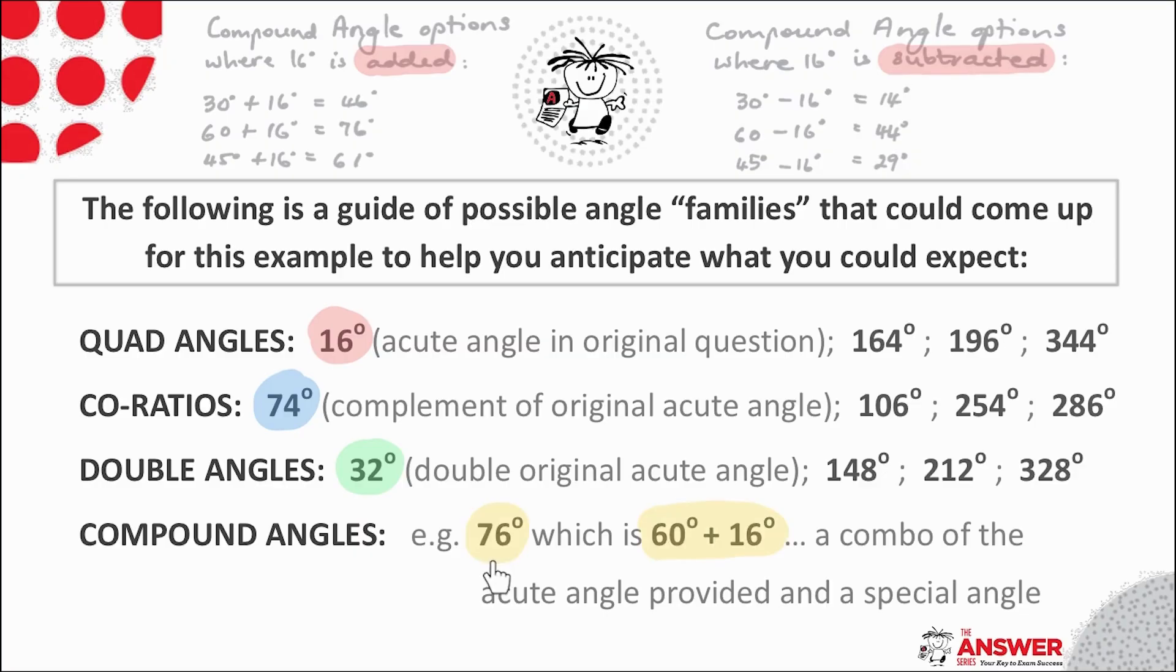Note how close 76 is to 74 and yet if you're not sure to add these layers of thinking this angle could just be confusing and even seem like a mistake in the question.